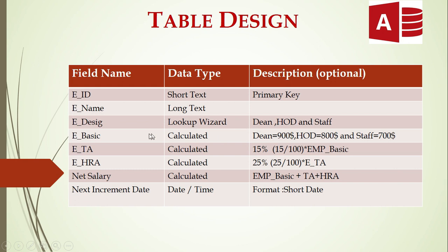The three designation options are Dean, HOD, and Staff. Employee Basic will be a calculated data type: if Dean it will be $900, if HOD it will be $800, and if Staff it will be $700. Employee TA will be calculated as 15% — that is 15 divided by 100 multiplied by Employee Basic. HRA will be calculated at 25%. Salary will be Employee Basic plus TA plus HRA. Next Increment Date will be date and time with short date format.